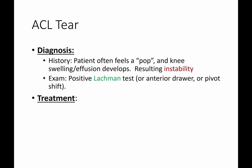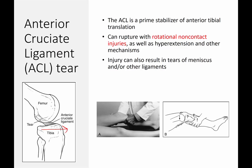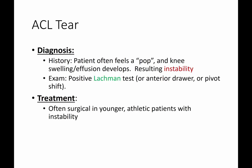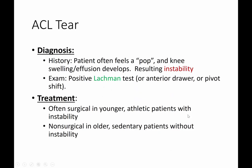On exam, the main test is the Lachman test. Here it's shown — the femur is stabilized and the tibia is translated anteriorly, while you can also push the femur posteriorly simultaneously. You're looking to see how much the tibia goes anteriorly. Other tests include the anterior drawer test, which is a little less sensitive, and the pivot shift test, which can be difficult to elicit, painful, and is often performed in the operating room under anesthesia, though some patients allow it in the office.